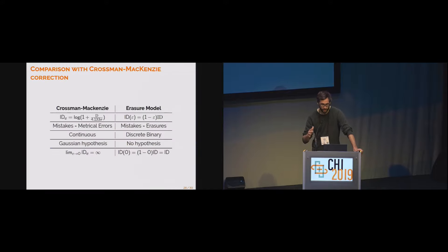If we compare the two corrections, the Crossman-Mackenzie correction and the one that comes from an erasure model, an important difference is that the Crossman-Mackenzie correction assumes the Gaussian distribution for the errors, whereas in our case, there is no such assumption. We have a non-parametric formulation here. Another nice thing is that if you look at the condition for null error rates, the Crossman-Mackenzie correction is actually undefined. In our case, it simply reduces to the index of difficulty. This is simply interpreted as the index of difficulty is the transmitted information when there are no errors. It's a very simple interpretation.